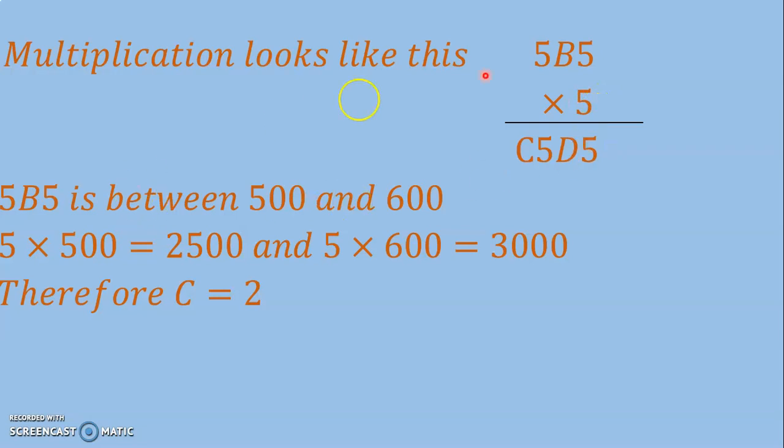The number 5B5 is between 500 and 600. Multiplying 500 by 5 gives 2500, and 5 × 600 equals 3000.